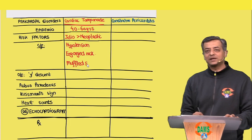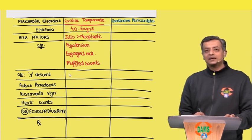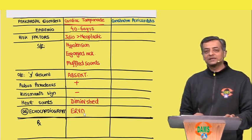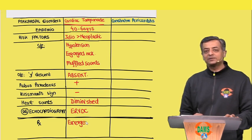Muffled heart sounds confirm the typical Beck's triad. The Y descent is absent in this patient, pulsus paradoxus is present, and Kussmaul's sign is absent. Heart sounds are diminished, and echocardiogram shows early right ventricular diastolic collapse. The treatment is emergency pericardiocentesis.